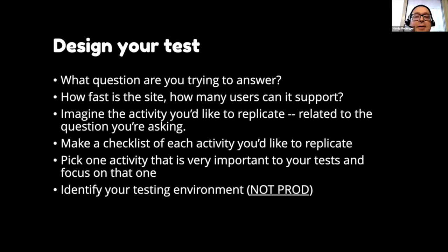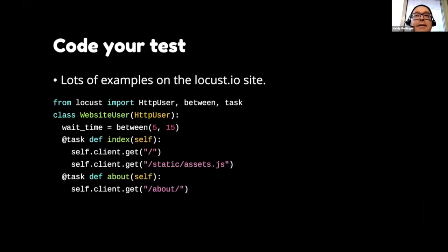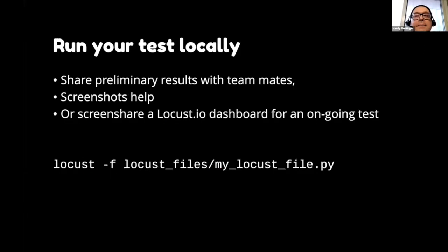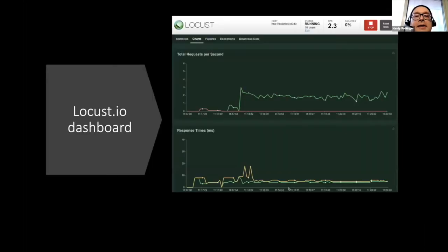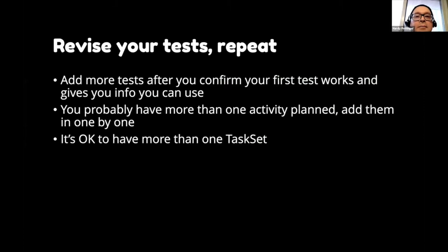Identify your environment — probably staging, but anything production-like will work. Just not prod. Then code your test — it might look something like this, it's Python, and there are lots of examples on the Locust site. Run it locally at first, ask your teammates to review the results via screenshots or a screen share. Here's what the dashboard looks like: at the top it tells you what host you're targeting and how many users, which you can change without stopping the test. You can stop the test at any point with the big red stop button and reset the stats.